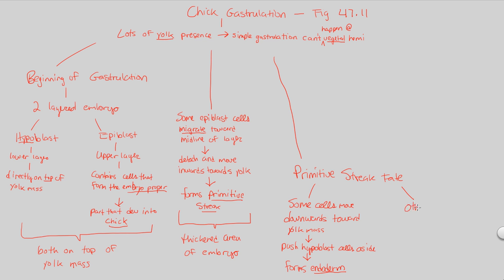The other germ layer that results from the primitive streak has a different fate. We had some cells move downward toward the yolk mass, pushing hypoblast cells aside to form the endoderm. Other cells of this primitive streak are going to migrate laterally — to the sides instead of downwards. When they migrate laterally, these are the cells that will eventually form the mesoderm. So now we've covered our second germ layer of interest and importance.